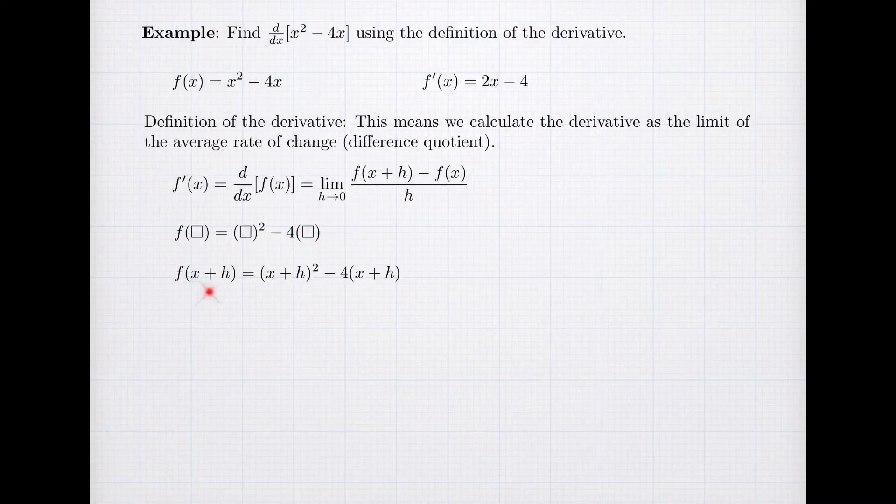So when I calculate f(x+h), we're going to take x plus h and square it. And we're going to take x plus h and multiply it by negative 4 and add the results.